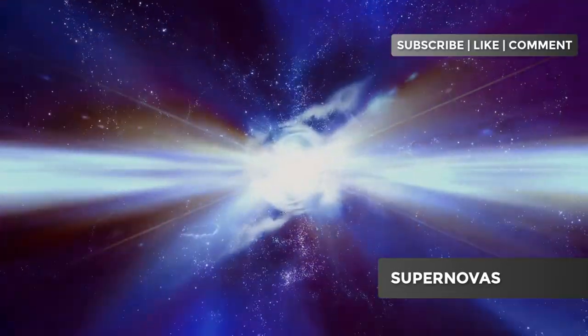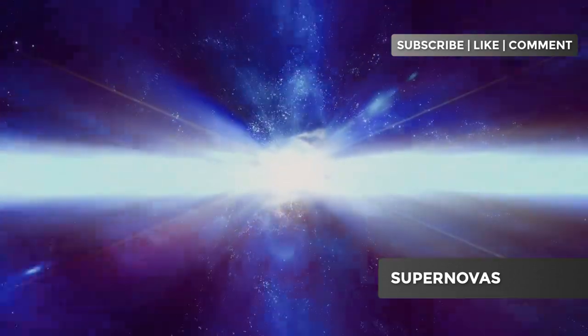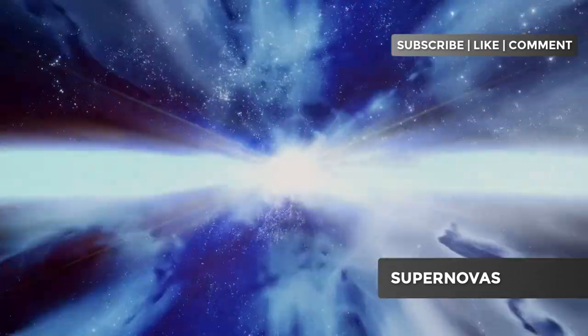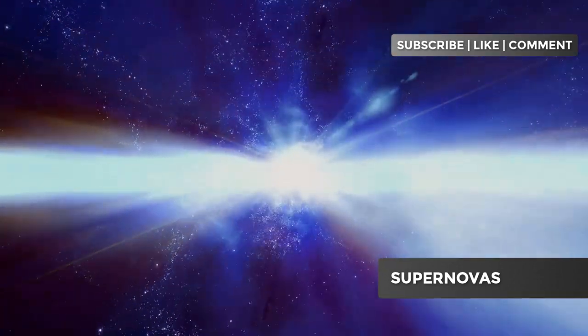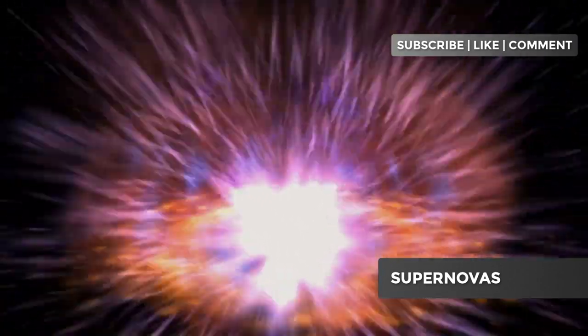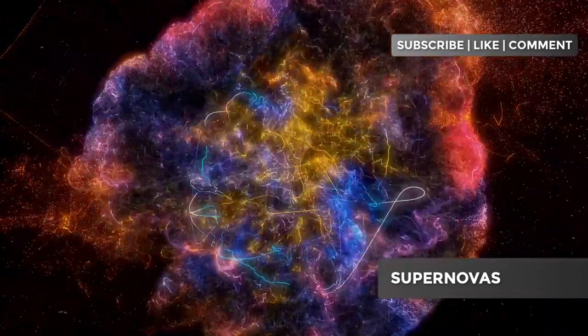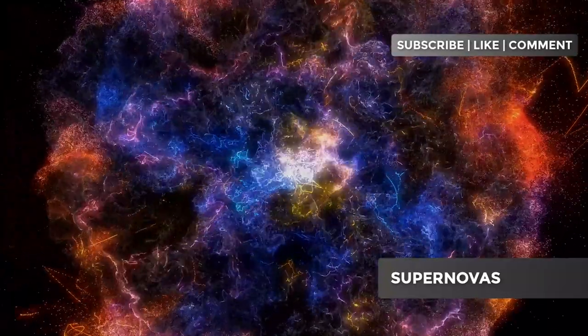When the white dwarf's mass reaches a critical limit, the pressure and temperature increase to the point of triggering an uncontrolled thermonuclear explosion, completely destroying the star. These explosions are also incredibly bright and release vast amounts of heavy elements such as iron and nickel into the interstellar space. These supernovas help enrich the interstellar medium with essential elements for the formation of new stars and planets.